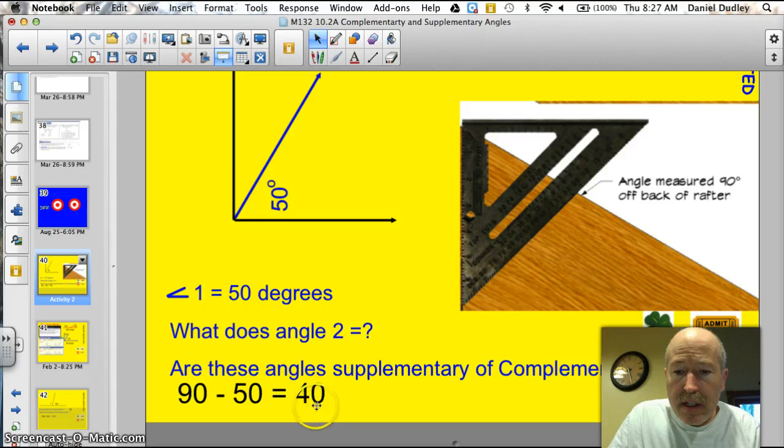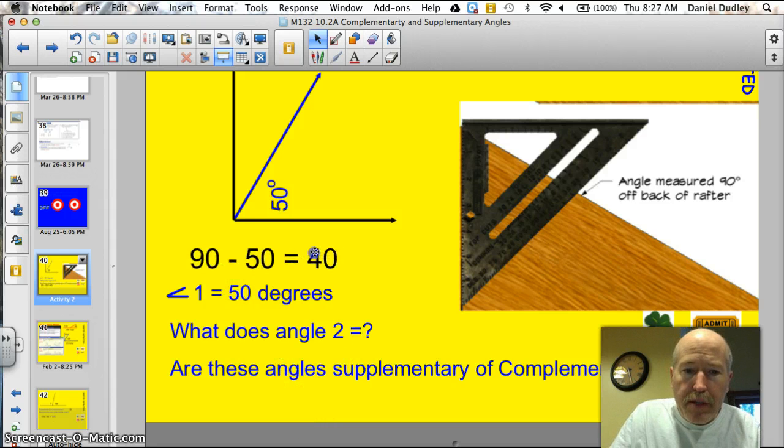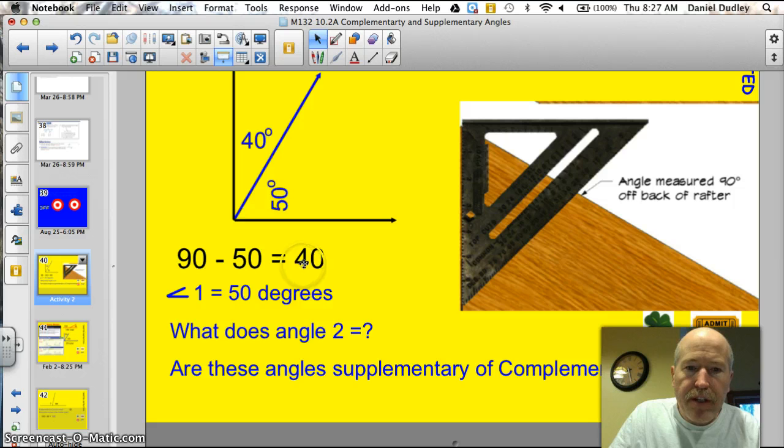And are these supplementary or complementary angles? Well, here's the math. This is a 90 degree angle here. And if you subtract the 50 degrees, you're going to have 40 left. So this is a 40 degree angle. Because 90 minus 50 is 40. Just like I put here.